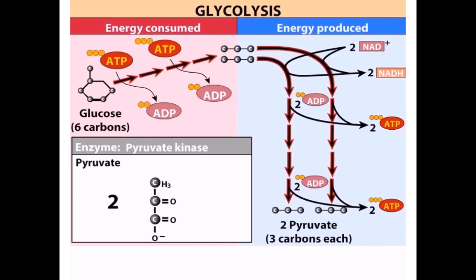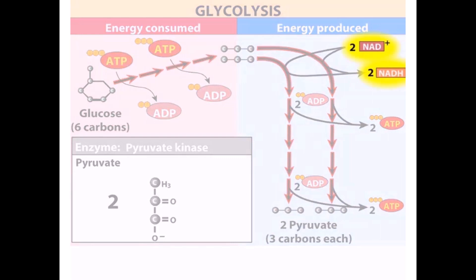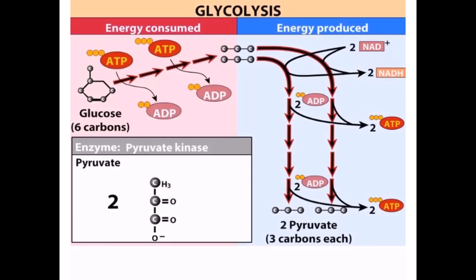In addition to producing ATP, glycolysis converts two molecules of NAD+ to NADH. The NADH then serves as the donor of electrons for other oxidation-reduction reactions within the cell.